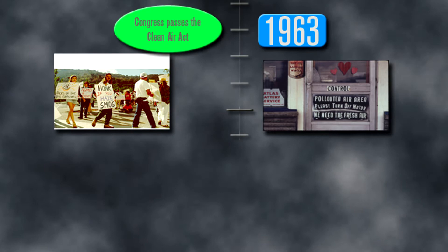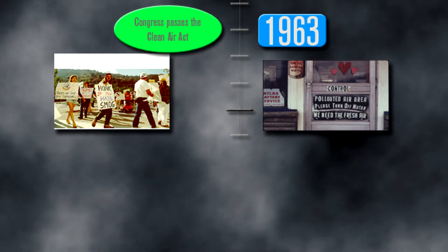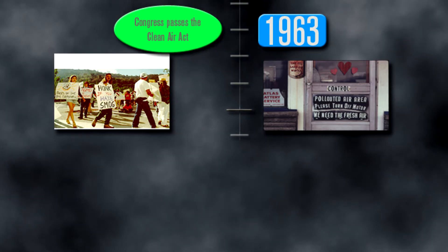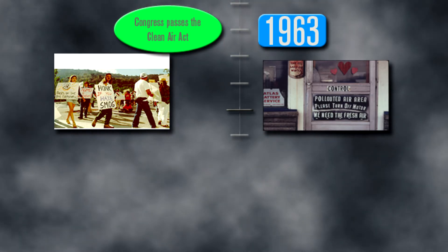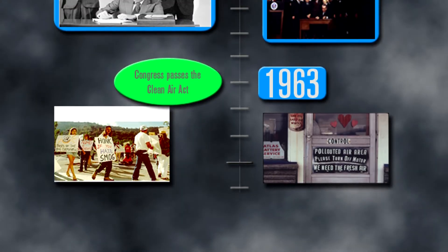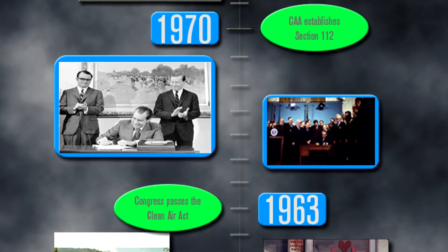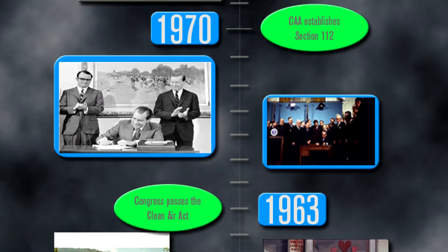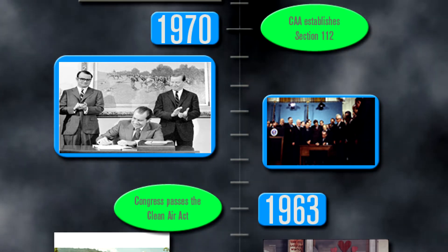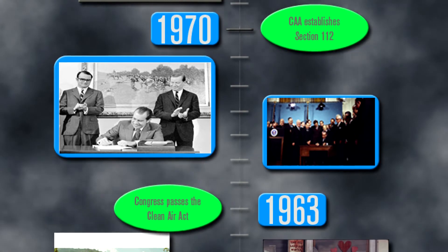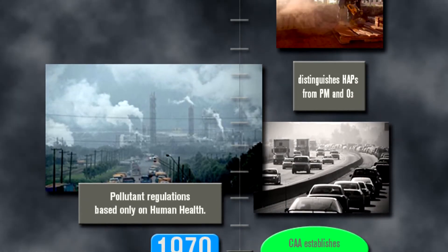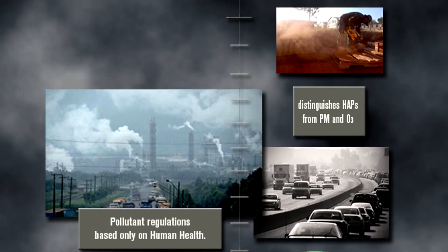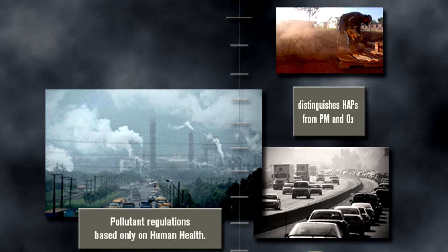Based on growing concerns about air quality, Congress passed the 1963 Clean Air Act, which helped strengthen research programs for the prevention and reduction of air pollution. This original Clean Air Act has been amended several times, including in 1970 and in 1990. The 1970 Clean Air Act established Section 112 to deal with air pollutants considered toxic and to set emission standards for those pollutants. The 1970 amendments distinguished air toxics, also called hazardous air pollutants or HAPs, from criteria pollutants such as particulate matter and ozone.